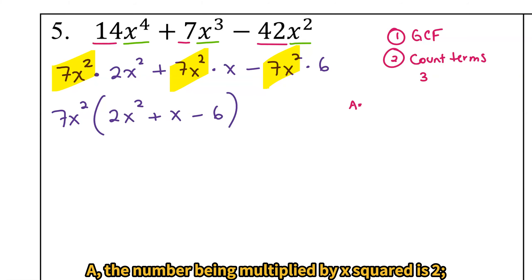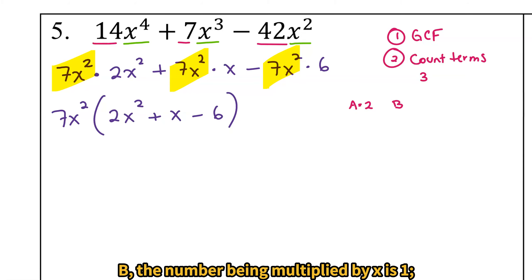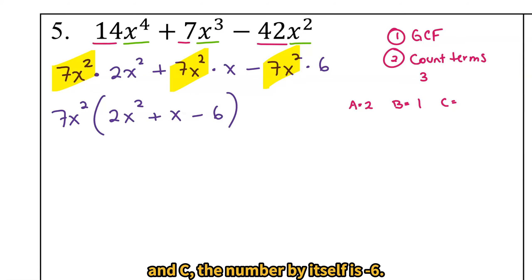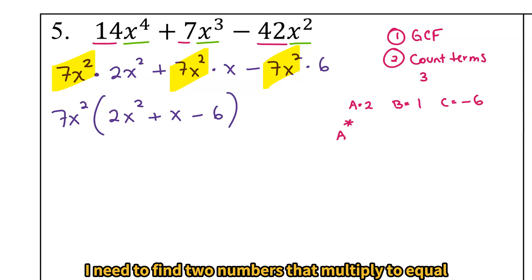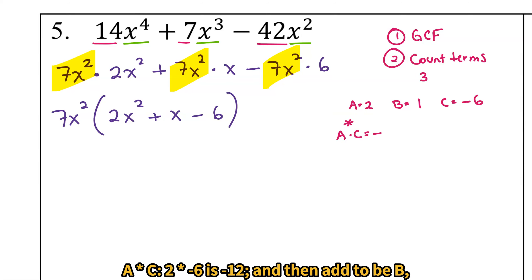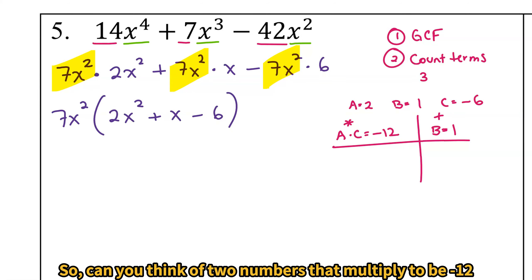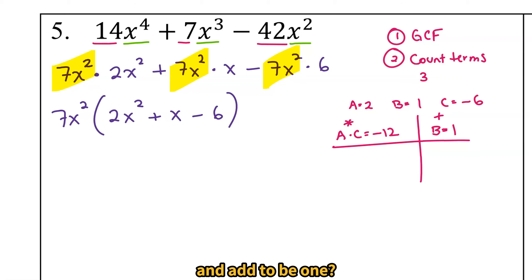The AC method says A, the number being multiplied by x squared, is 2. B, the number being multiplied by x, is 1. And C, the number by itself, is negative 6. I need to find two numbers that multiply to equal A times C: 2 times negative 6 is negative 12. And then add to be B, which is 1.